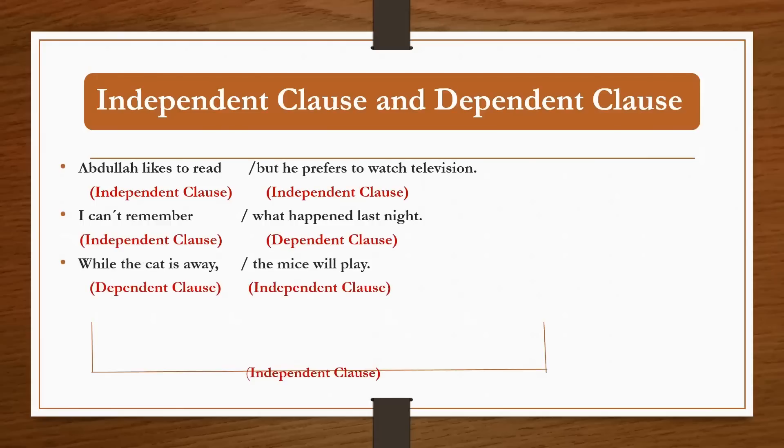One more example for further clarification. While the cat is away, the mice will play. Again, there are two clauses. 'While the cat is away' - if you take just this clause, your sentence will not be complete. This is why it's a dependent clause, and 'the mice will play' is independent.